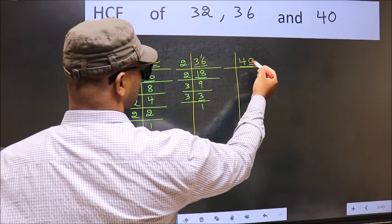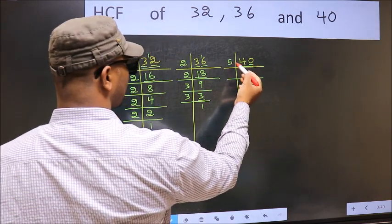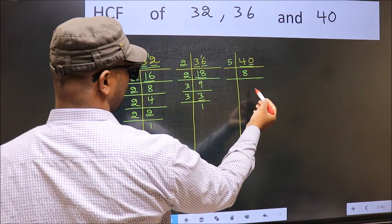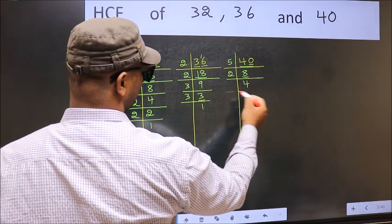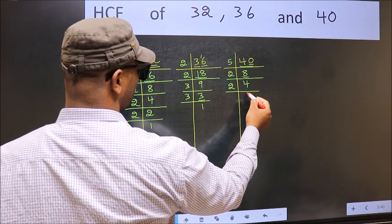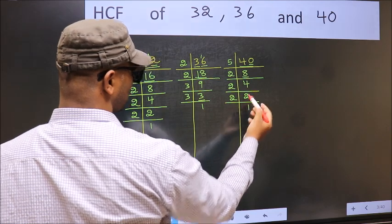Now the other number 40. Last digit 0 so take 5. When do we get 40 in 5 table? 5, 8 is 40. Now 8 is 2 fours, 8. Now 4 is 2 twos, 4. Now we have 2, 2 is a prime number so 2 once, 2.